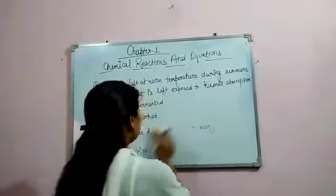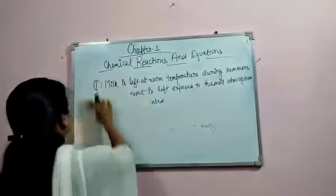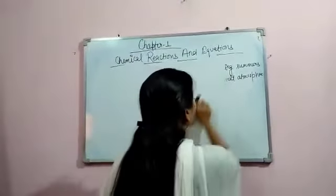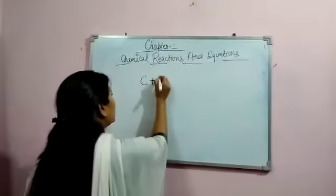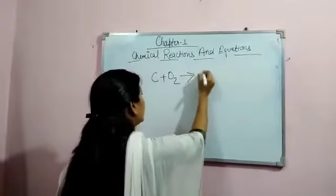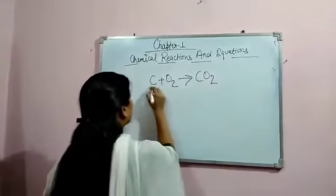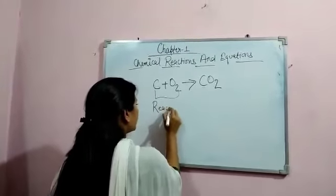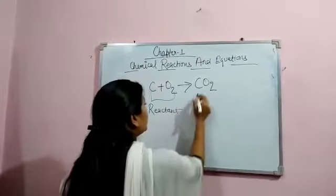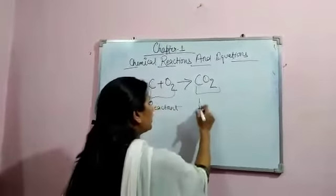Let us consider the example of carbon and oxygen. Carbon and oxygen combine with each other to form carbon dioxide. C plus O2 gives CO2. The substances which are combining together are called reactant and the new substance formed is called product.